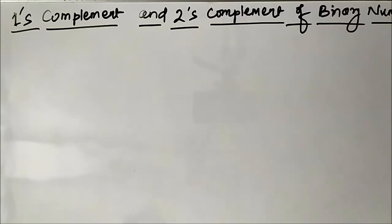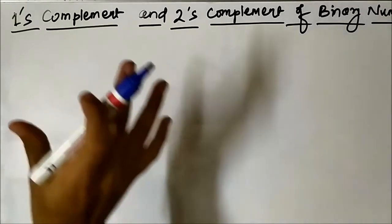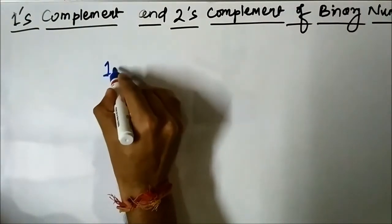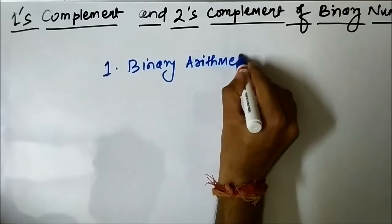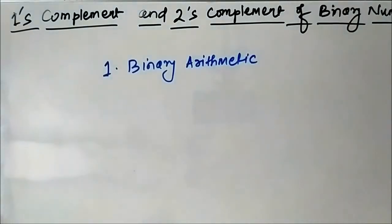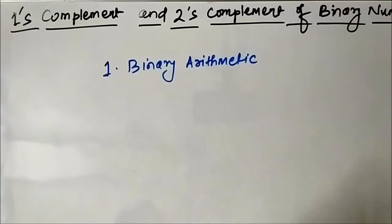This concept is important in the number system because it is utilized in binary arithmetic — binary addition, binary subtraction, binary multiplication, binary division and so on. It is used particularly in the binary subtraction part because if we do direct subtraction, it sometimes can get confusing. So we convert that subtraction into binary addition with the help of this complement method. We will discuss that in detail when we go to the binary arithmetic part, but just understand that this concept is used in binary arithmetic.